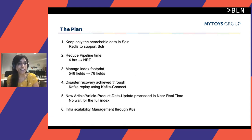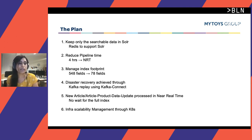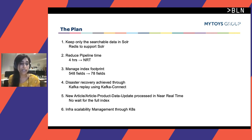To counter this, we planned a long-term solution. We wanted to keep only searchable data in Solr to reduce the number of fields, and we planned to use Redis to support Solr. We wanted to reduce the pipeline time from four hours to near real time. We managed to reduce the index footprint by cutting fields from 548 down to 78 fields across all shops. Disaster recovery was achieved through Kafka replay using Kafka Connect, there was no wait for full re-index anymore, and infrastructure scalability was managed through Kubernetes.